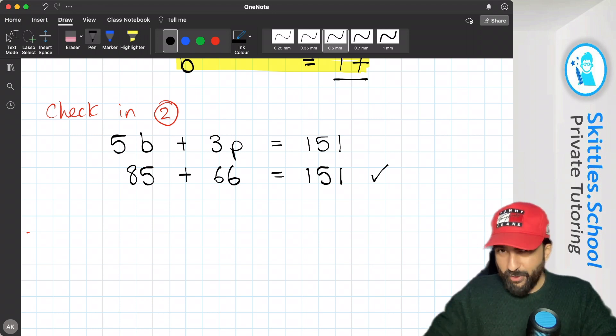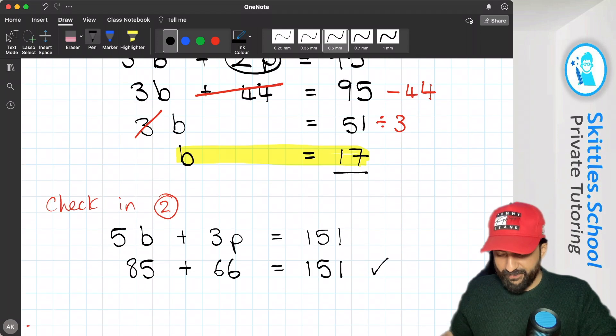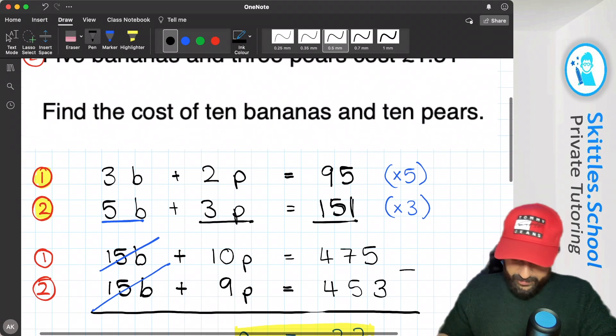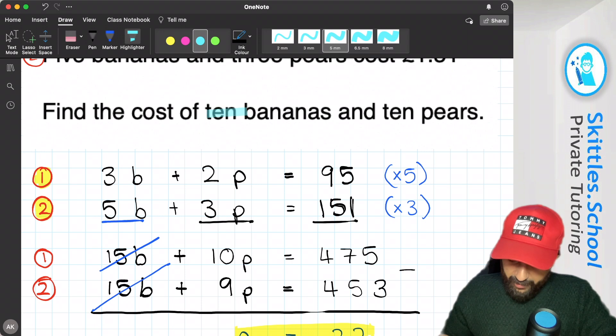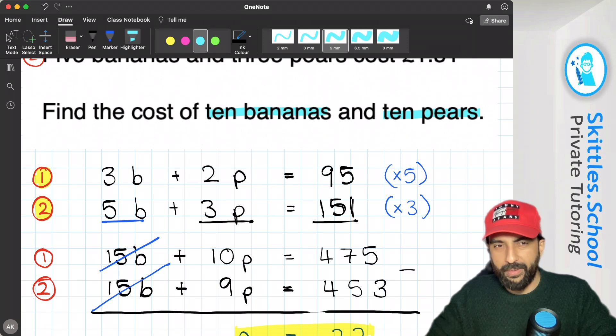Okay, but that's not the answer to the question. The question actually asks us, we've got to find the cost of 10 bananas and 10 pears. We need to work out the cost of 10 of them.